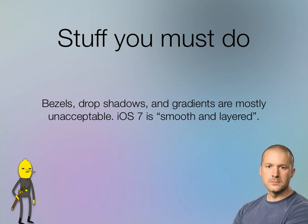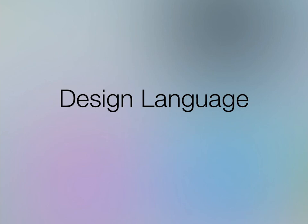iOS 7 actually has a fairly strong design language. It's all about translucency, movement, colors, and things that are not in any way representative of the real world. It's a really nice new UI — Apple's just not entirely sure how to describe it themselves yet.